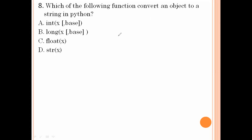Which of the following functions converts an object to a string in Python? Object to string in Python means str(), and option number D is the right answer.